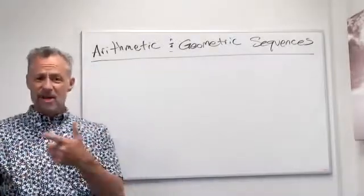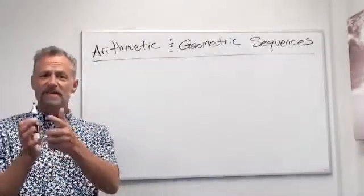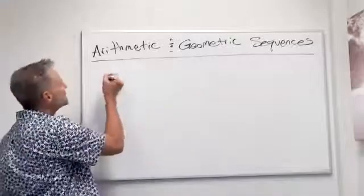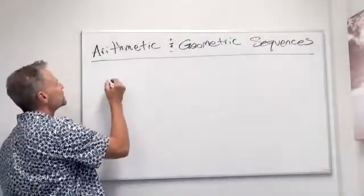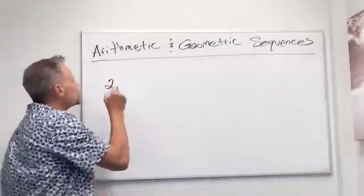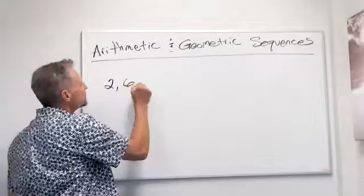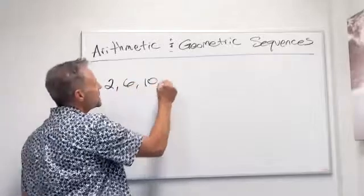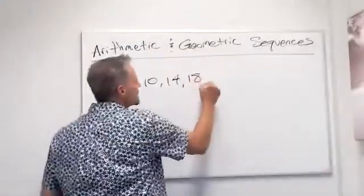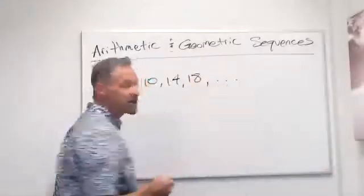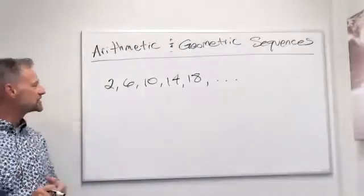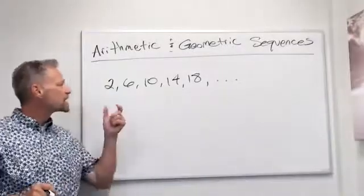So if I've got a sequence of numbers, it just means a list of numbers. Say I've got something like this: 2, 6, 10, 14, 18. Maybe it goes on forever, maybe it just stops — it doesn't matter.